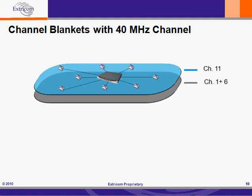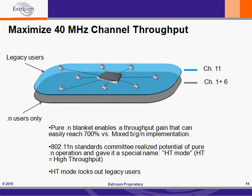There is a very big bonus here. Because each channel blanket is a separate SSID, the Extracon wireless LAN can be set up so that legacy users are allowed to connect only to the blue blanket. The gray blanket, which is our 40 MHz blanket, effectively becomes a pure N blanket. That enables a throughput gain that could easily reach 700% over what would happen if legacy users were allowed to access the N blanket. The 802.11n Standards Committee recognized this impact and gave a special name to a pure N blanket: HT Mode, which stands for High Throughput. HT Mode locks out legacy users from accessing the 802.11n BSS ID.